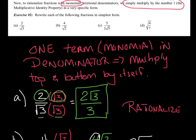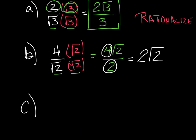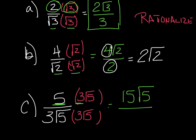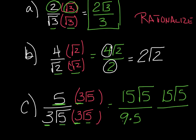Letter C: 5 over 3 radical 5. I want to multiply by 1, which is something over itself, and I can't leave the radical in the bottom. So I'm going to multiply by 3 radical 5 over 3 radical 5. On top, 5 and 3 are outside, so when I multiply those I get 15 radical 5. On the bottom, the 3s are outside giving me a 9, and radical 5 times radical 5 is just 5. So I've got 15 radical 5 all over 45.